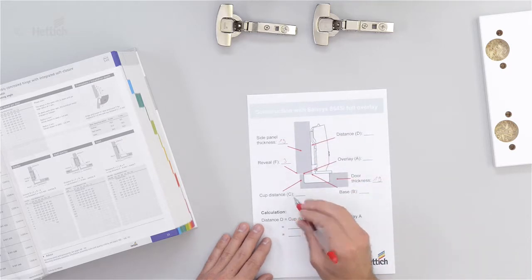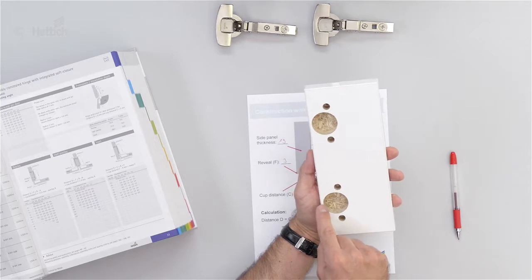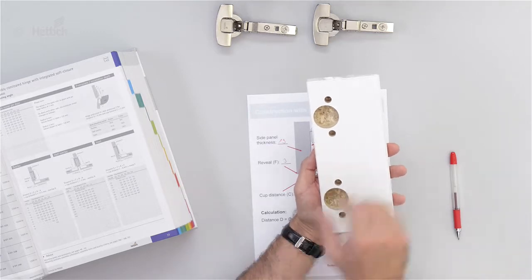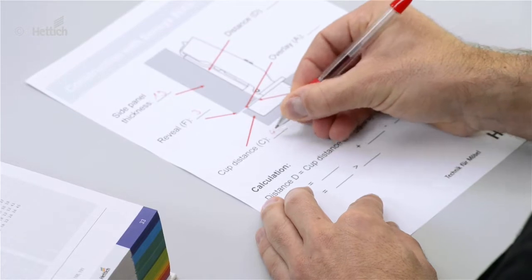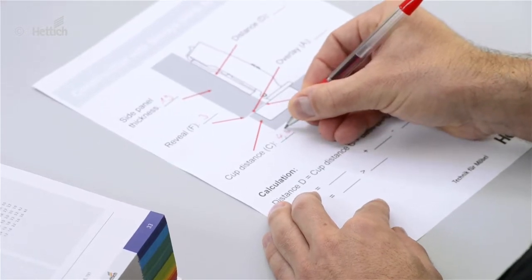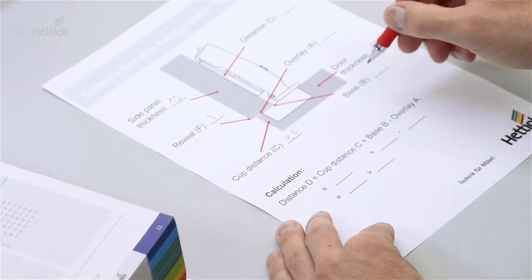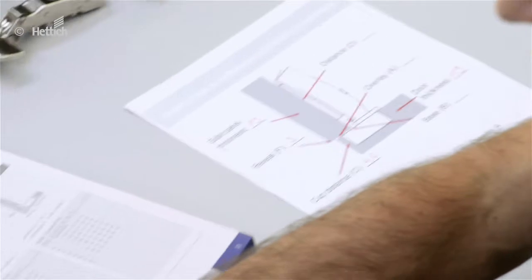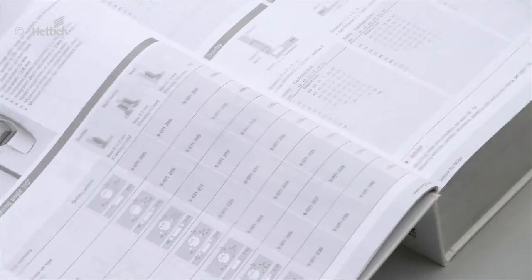Also the cup distance C which is the distance between the hinge cup drilling and the edge of the door is 4.5 mm in this example. As I mentioned before, the base B is here shown in the catalog, it is 12.5 mm.